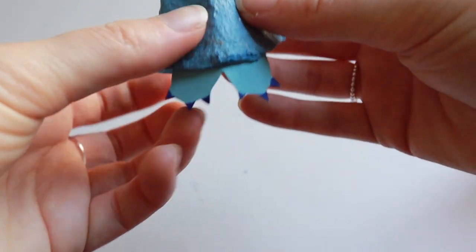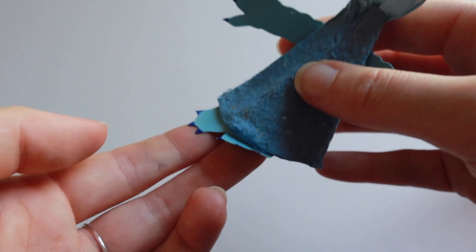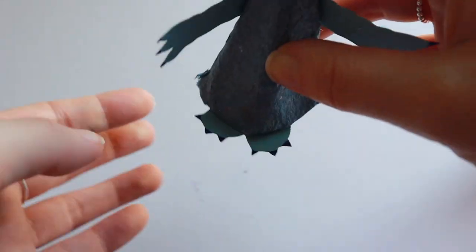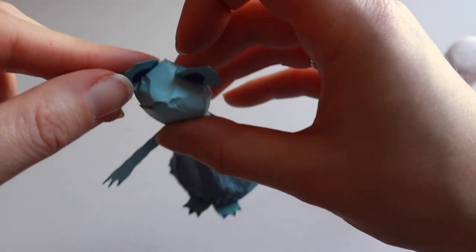Gently fold up the feet. If your character has ears, put glue on the tabs, then stick them to the head.